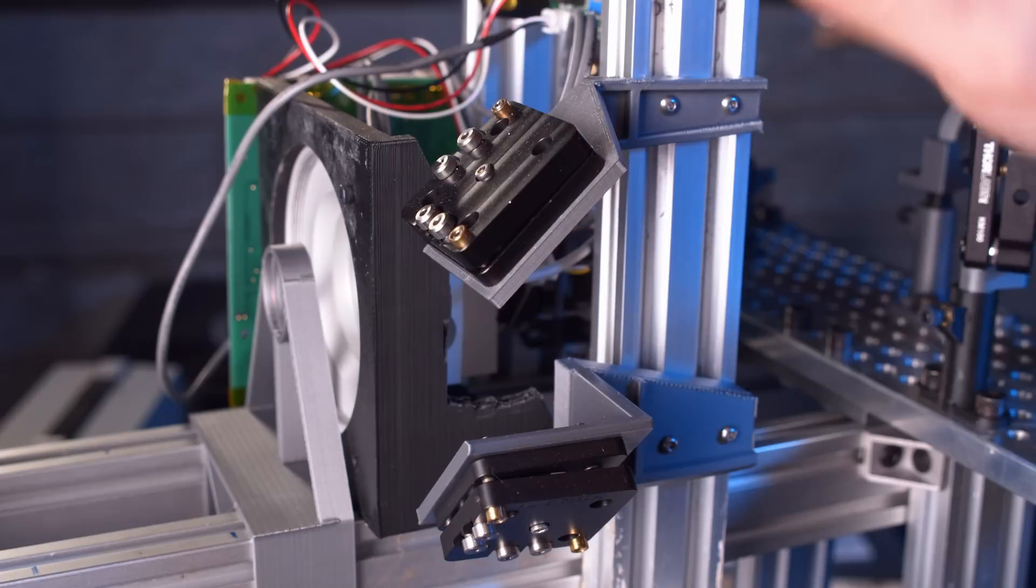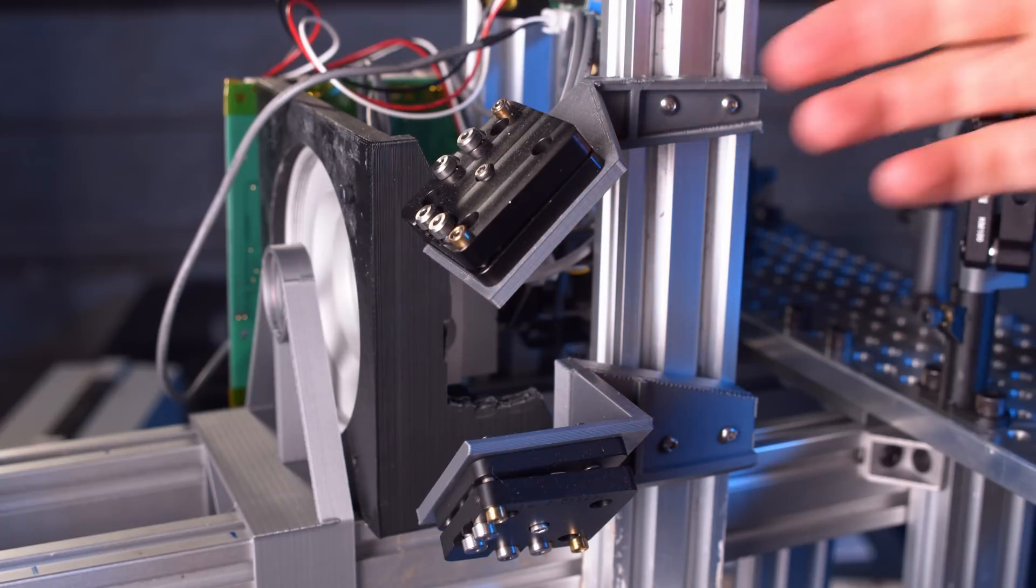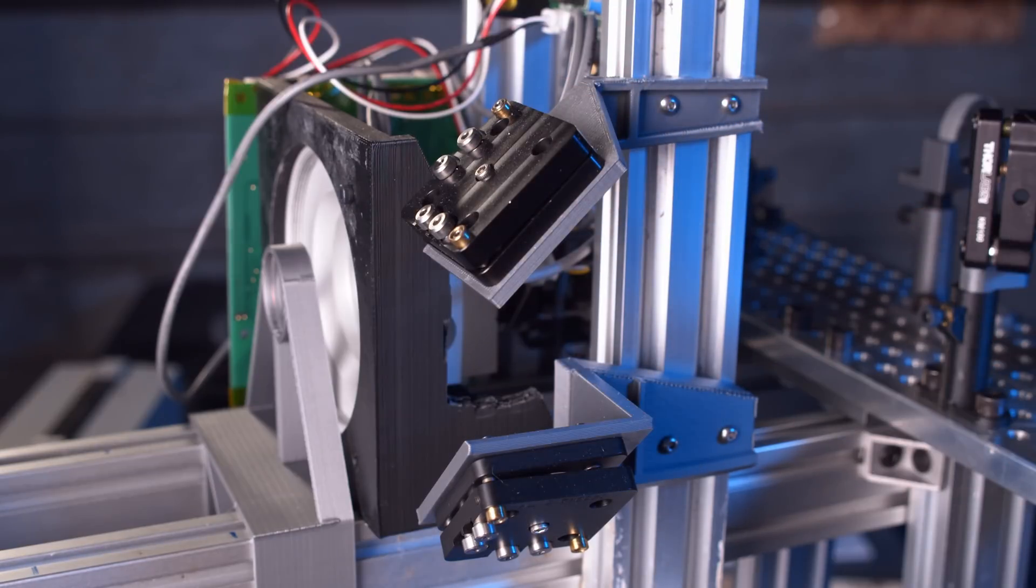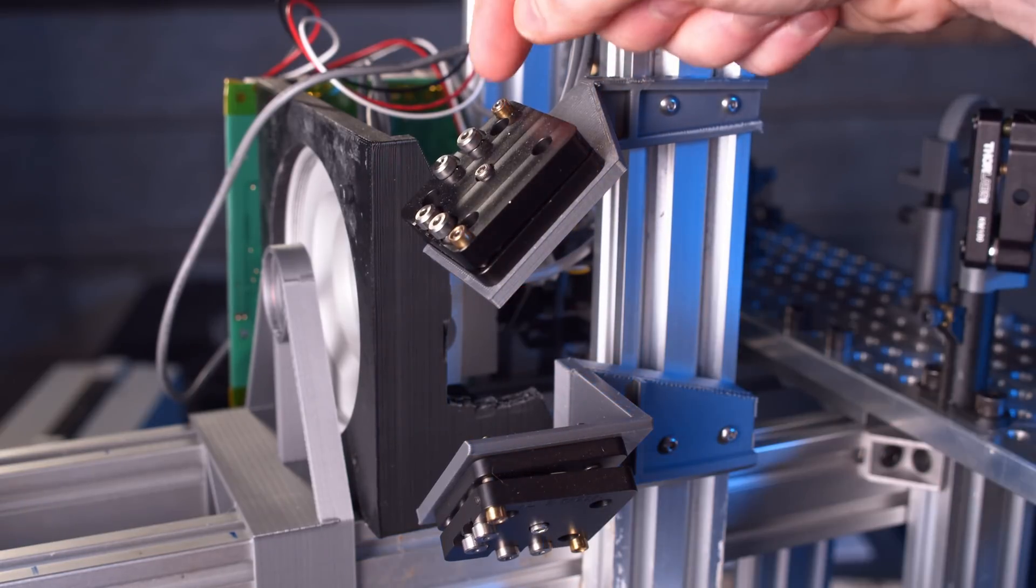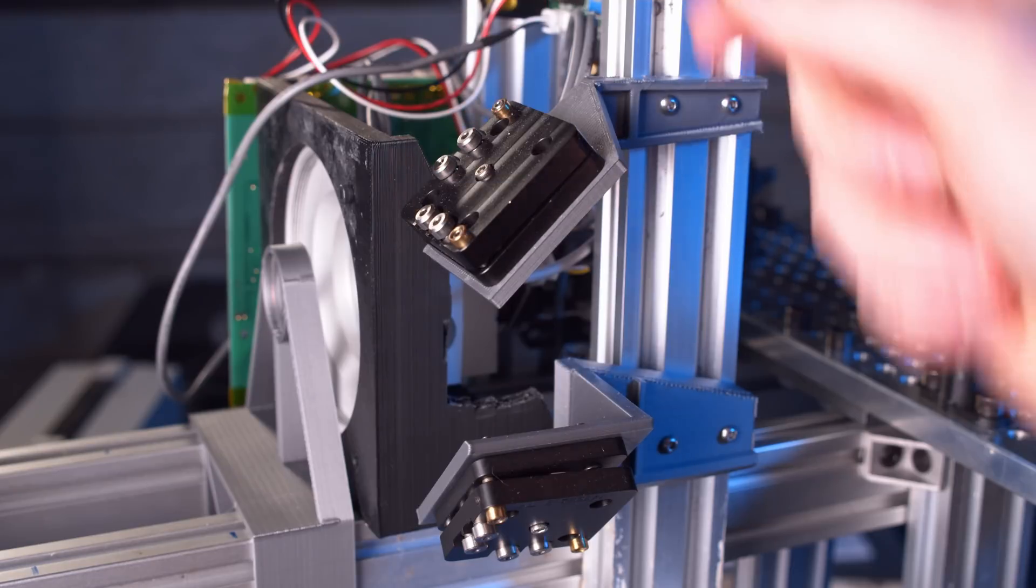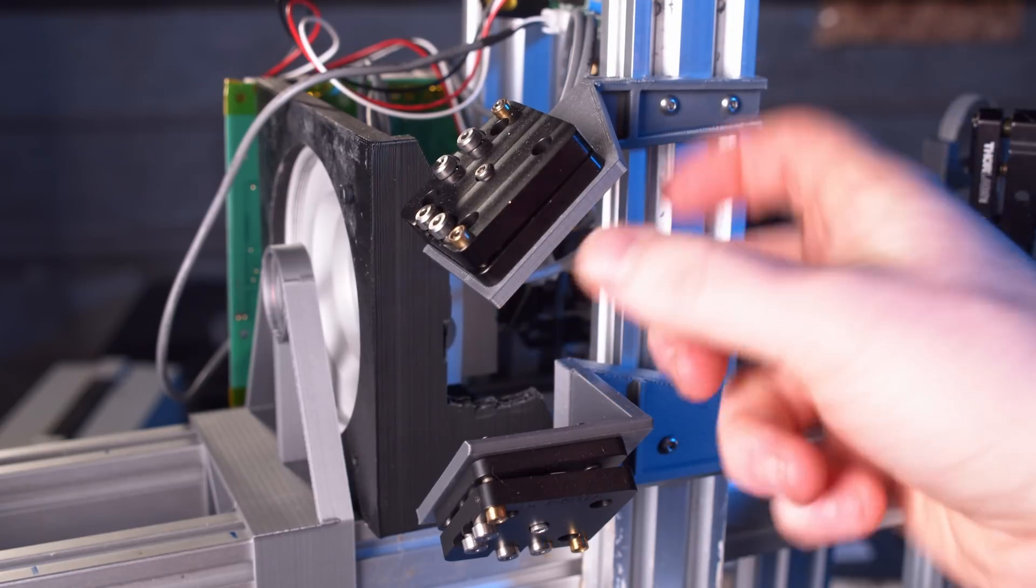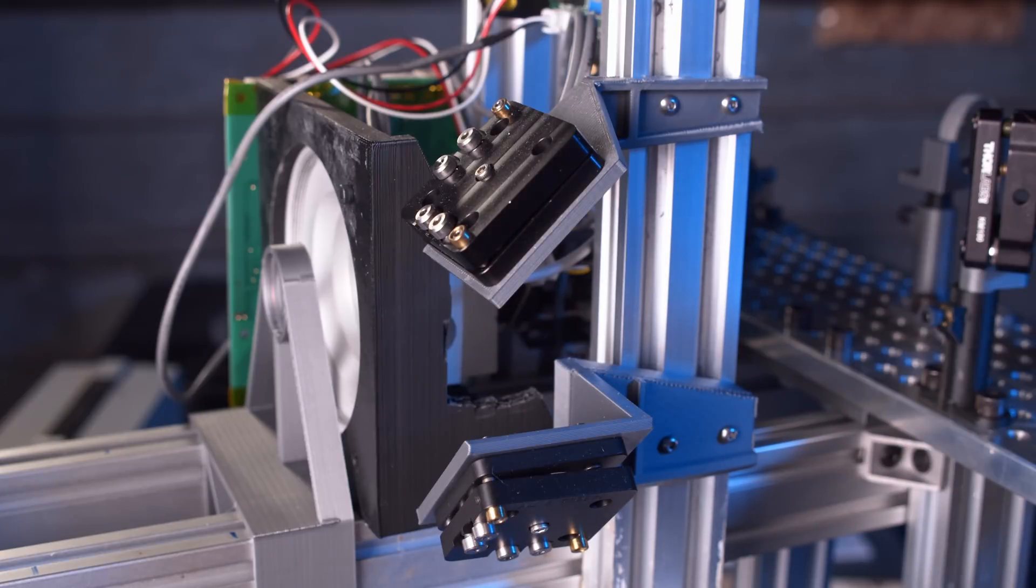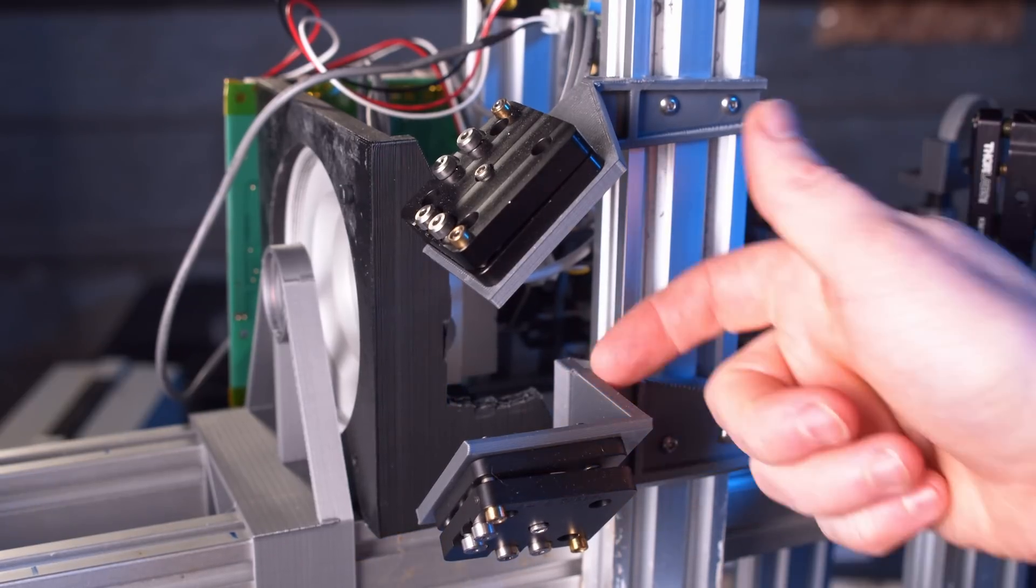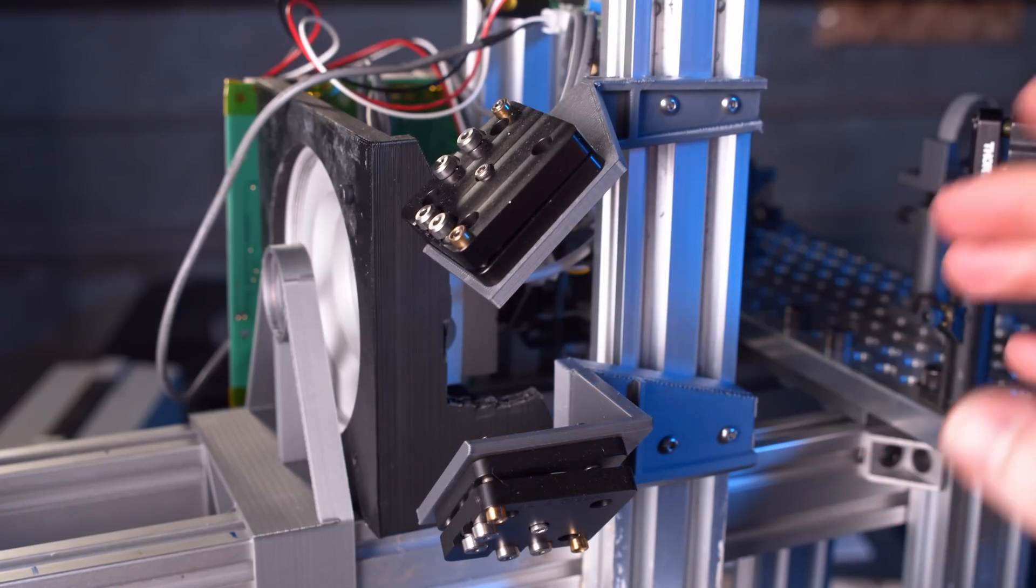So this top one in particular is pretty wobbly. So any adjustment of these kinematic screw mounts on the top tend to make the whole thing wobble around and makes it a lot more difficult to align than it should be. The bottom one is a little better just because the design is a little stiffer, but again, not great.